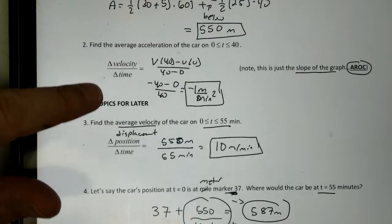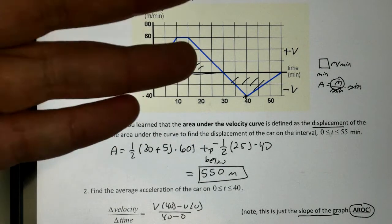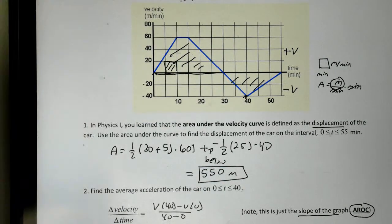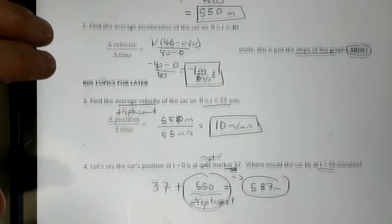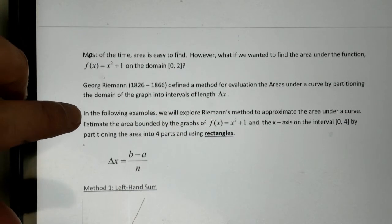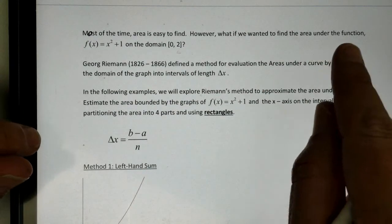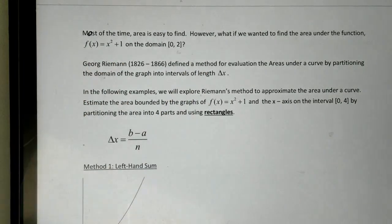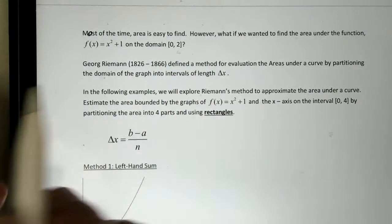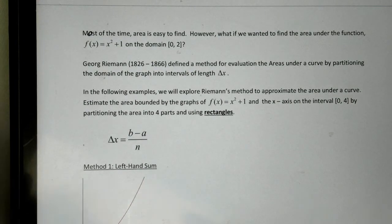We had triangles, we have rectangles, we can do circles, trapezoids. I know all those area formulas. However, what if we wanted to find the area under the function f of x equals x squared plus 1 on the domain 0 to 2?